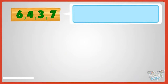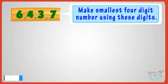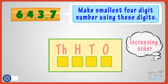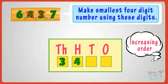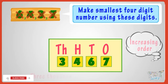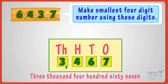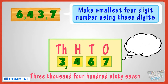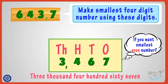Here are four numbers, and we have to make the smallest number possible using these numbers. Kids, you have to arrange the numbers from smallest to biggest — that is, in increasing order — to make the smallest possible number. So 3, 4, 6, 7 gives us three thousand four hundred and sixty-seven, which is the smallest number we can get.